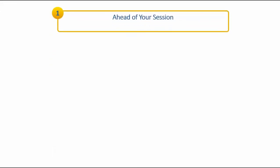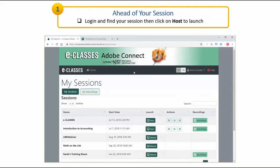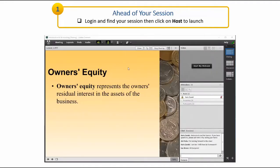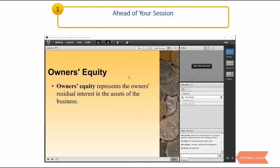Ahead of your session, log into eClasses Connect and locate the correct session. Click on Host to launch. Remember that Adobe Connect meeting rooms are persistent. The room will open up with the content from the last session still visible. You can create a new layout, or use existing layouts and replace or add pods as needed.